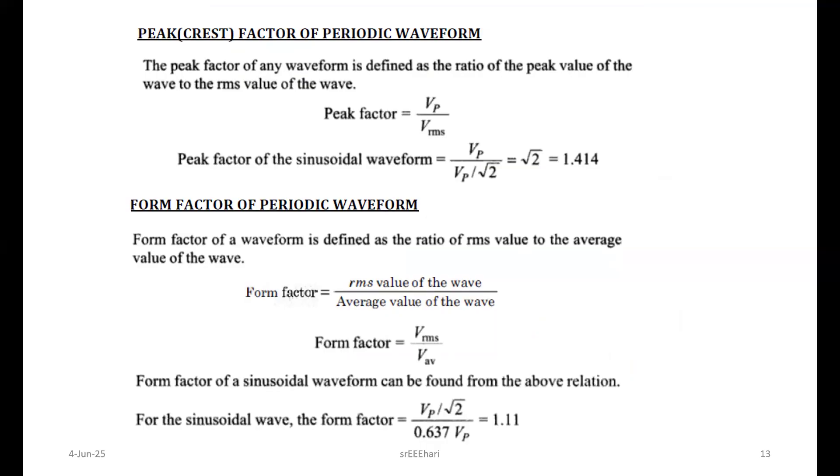We have some other factors: crest or peak factor. It's a ratio of peak value to RMS value, and for the sinusoidal it's a fixed value of 1.414. For the form factor, it's 1.11. These two are ratios. There are no units for these particular factors.